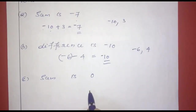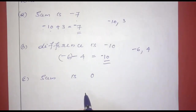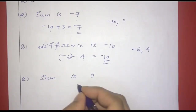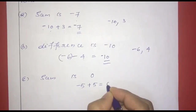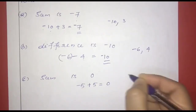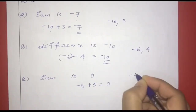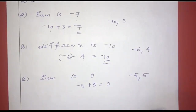The next one: the sum is 0. We add negative 5 and positive 5. Negative 5 plus 5 equals 0. So the pair of numbers is negative 5 and positive 5.